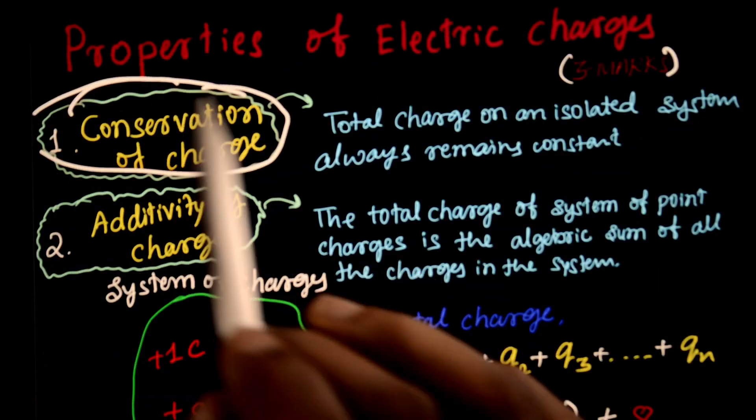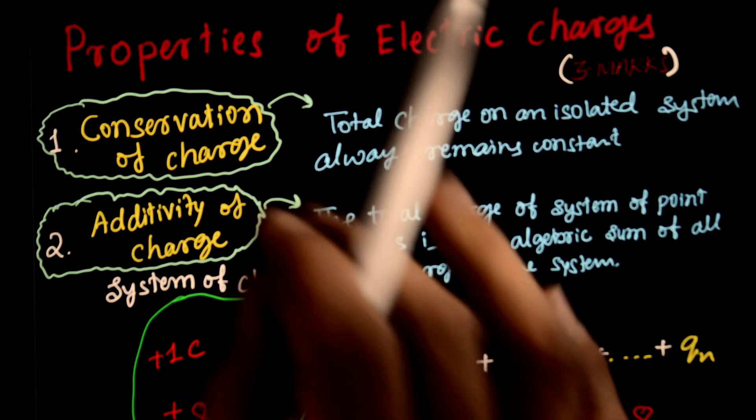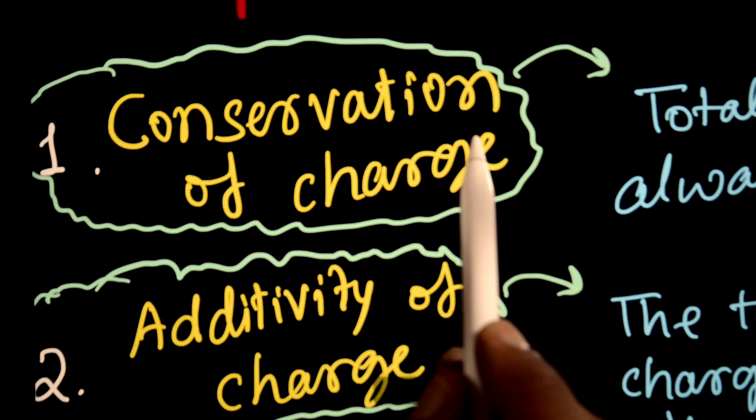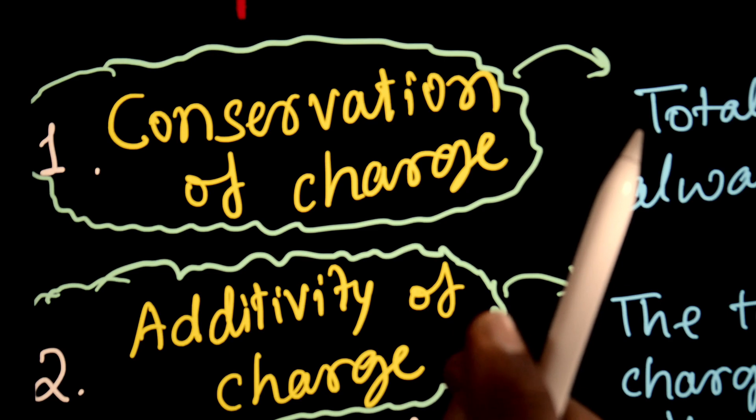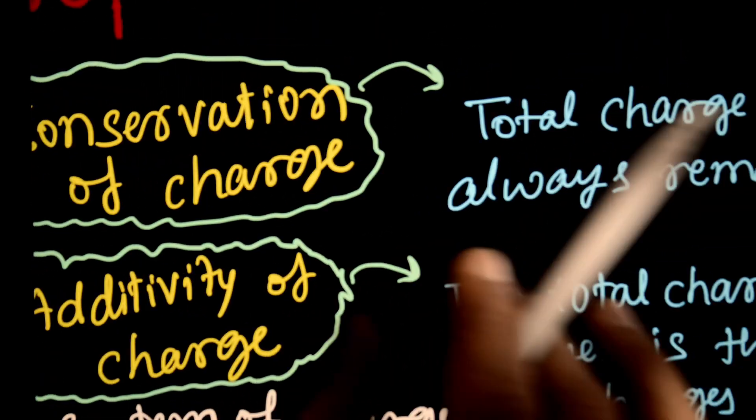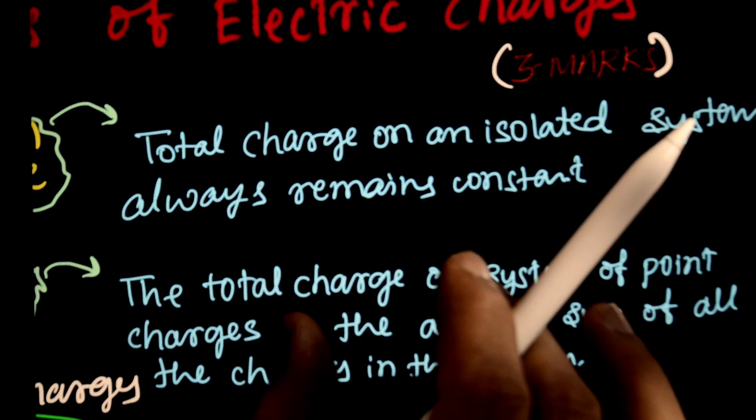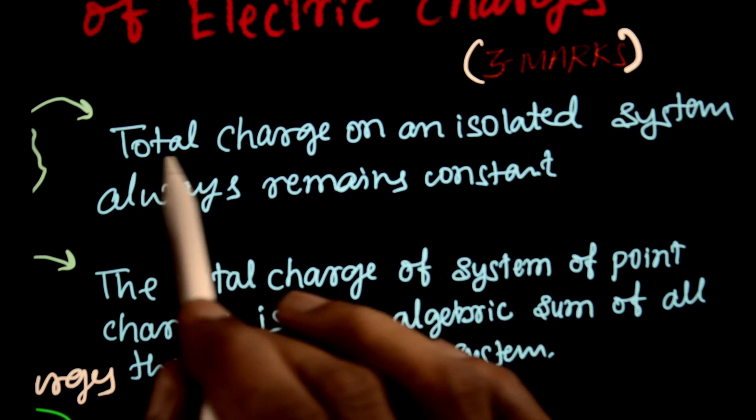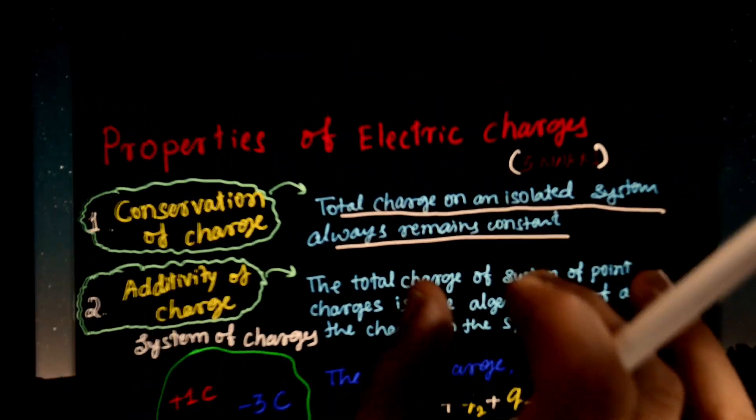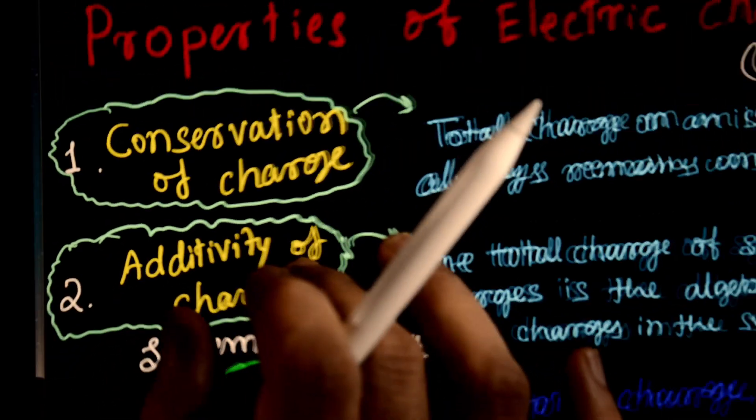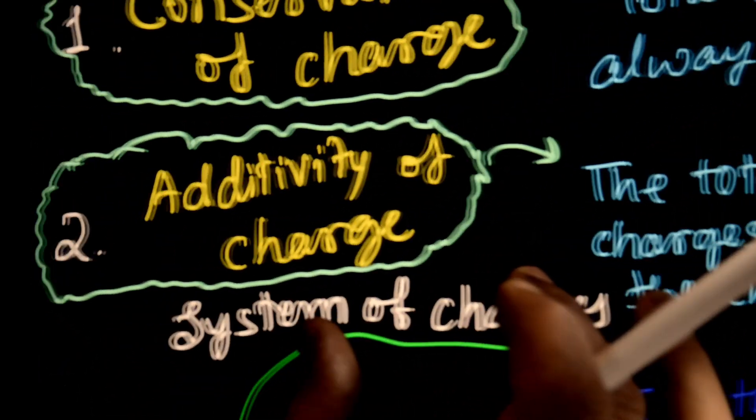Conservation of Charge. What do you mean by that? Simple meaning: you cannot create a charge or destroy the charge. Or you can also state it like this: the total charge on an isolated system always remains constant. This is conservation of charge. And the second property is